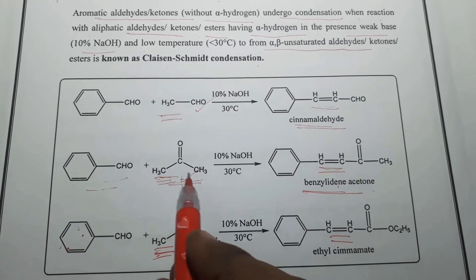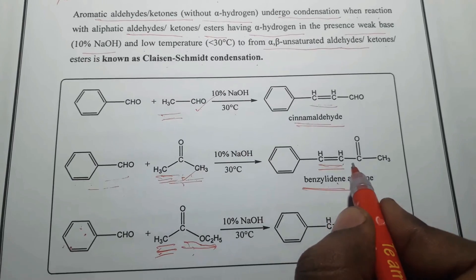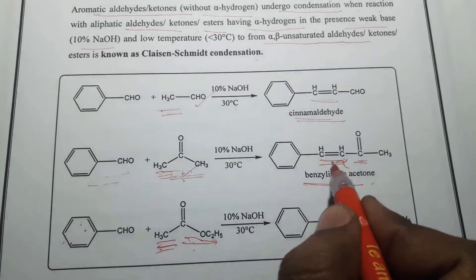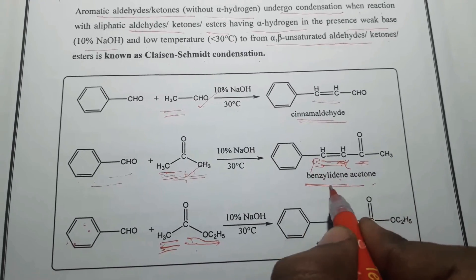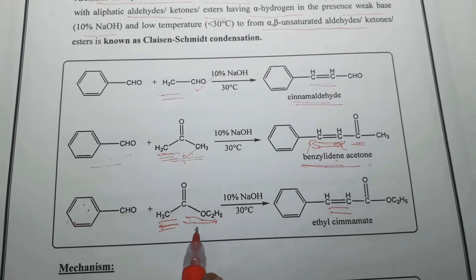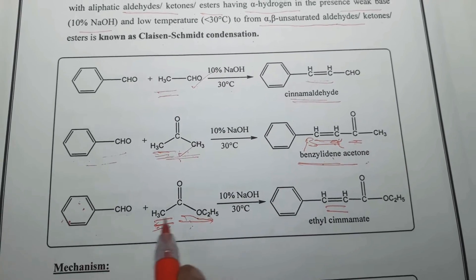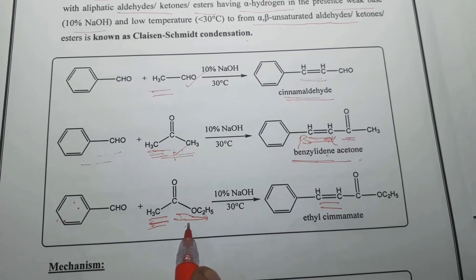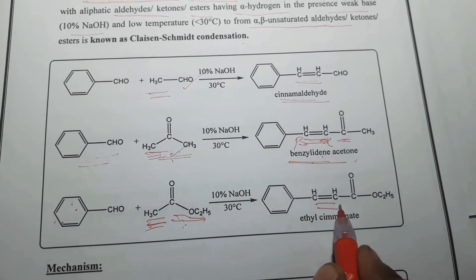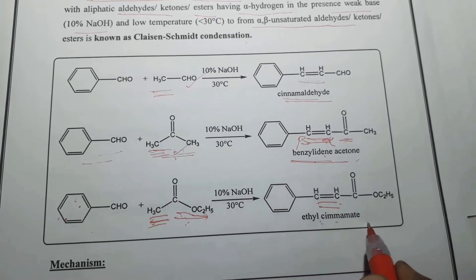Benzaldehyde undergoes condensation with acetone to give benzylidene acetone — an alpha-beta unsaturated ketone compound. Similarly, if you use an ester, aromatic aldehyde benzaldehyde reacting with the ester compound ethyl acetate leads to producing the respective alpha-beta unsaturated ester derivative, ethyl cinnamate.